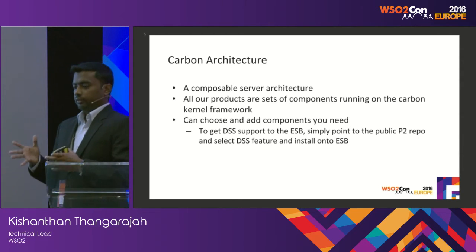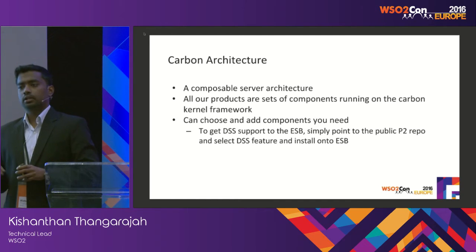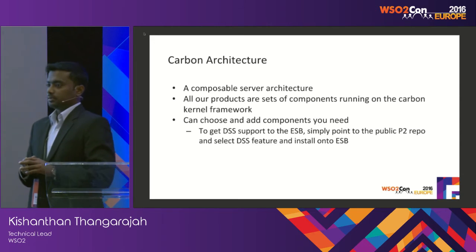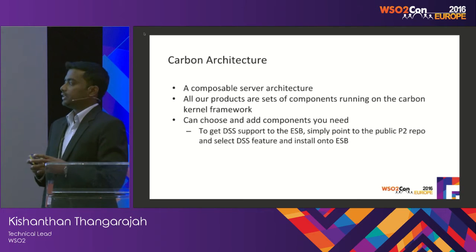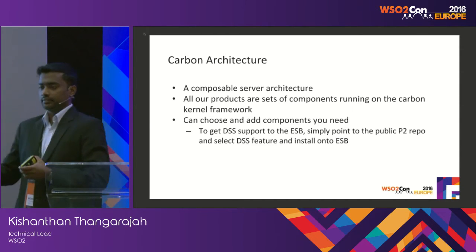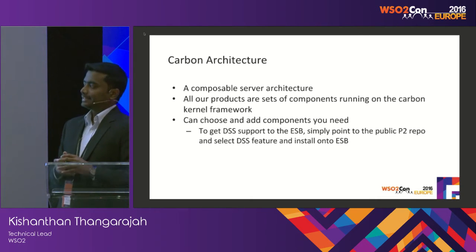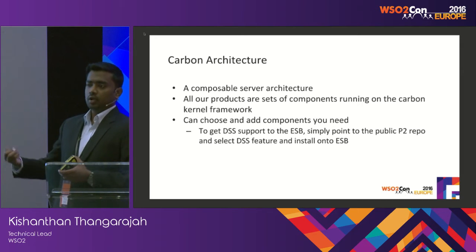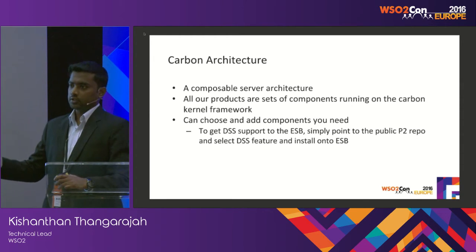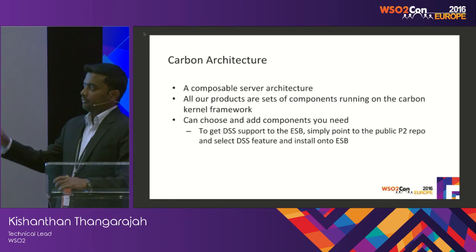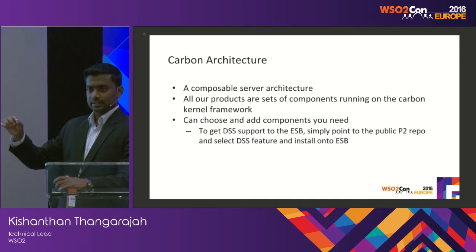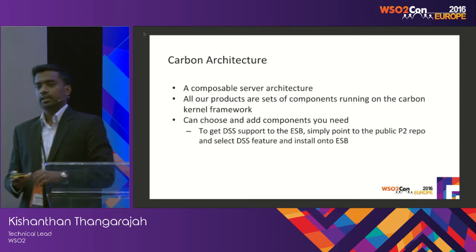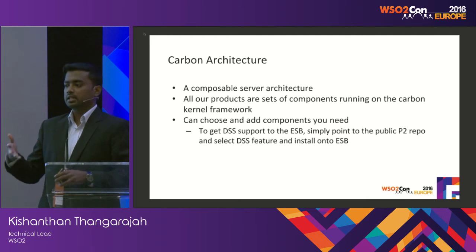Apart from the default features packed with a product, you can also customize the product. For example, a common use case for an ESB server is that customers want the data service feature as part of ESB. By default, ESB does not ship the DSS feature. So we develop features and host them in a public feature repository. From the ESB itself, you can point to this online repository, select the DSS features, and install them. The result is a new product — ESB plus DSS. Any features available in the online repository can be installed onto any product.